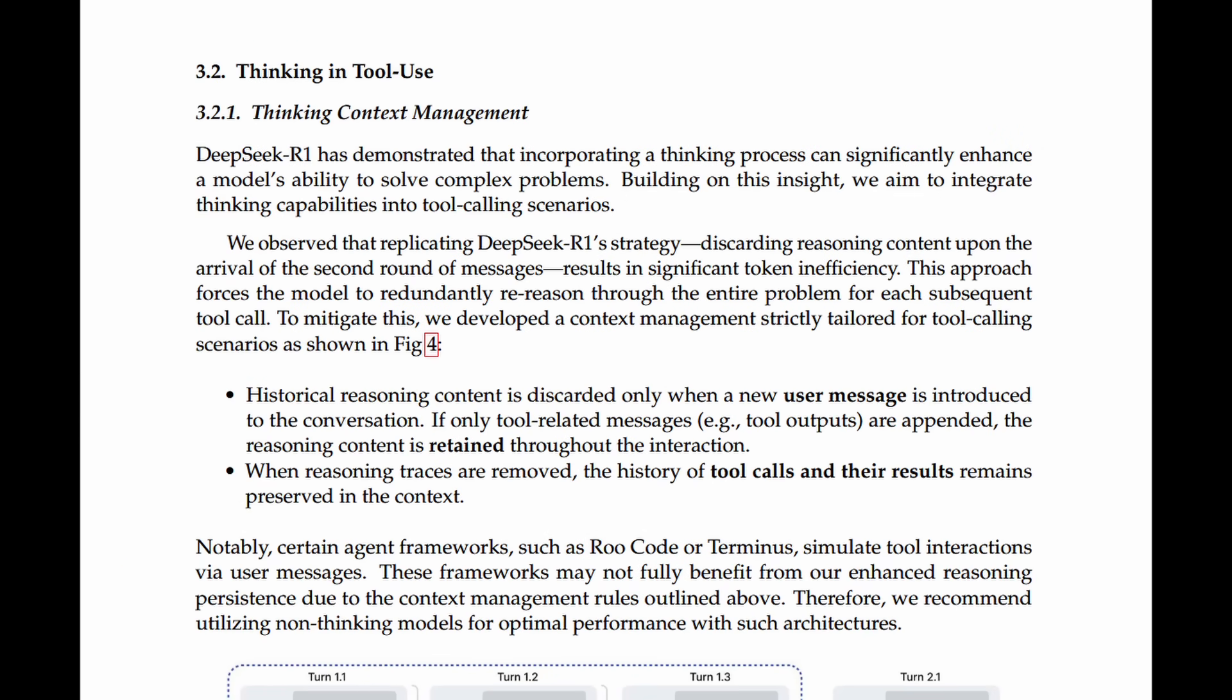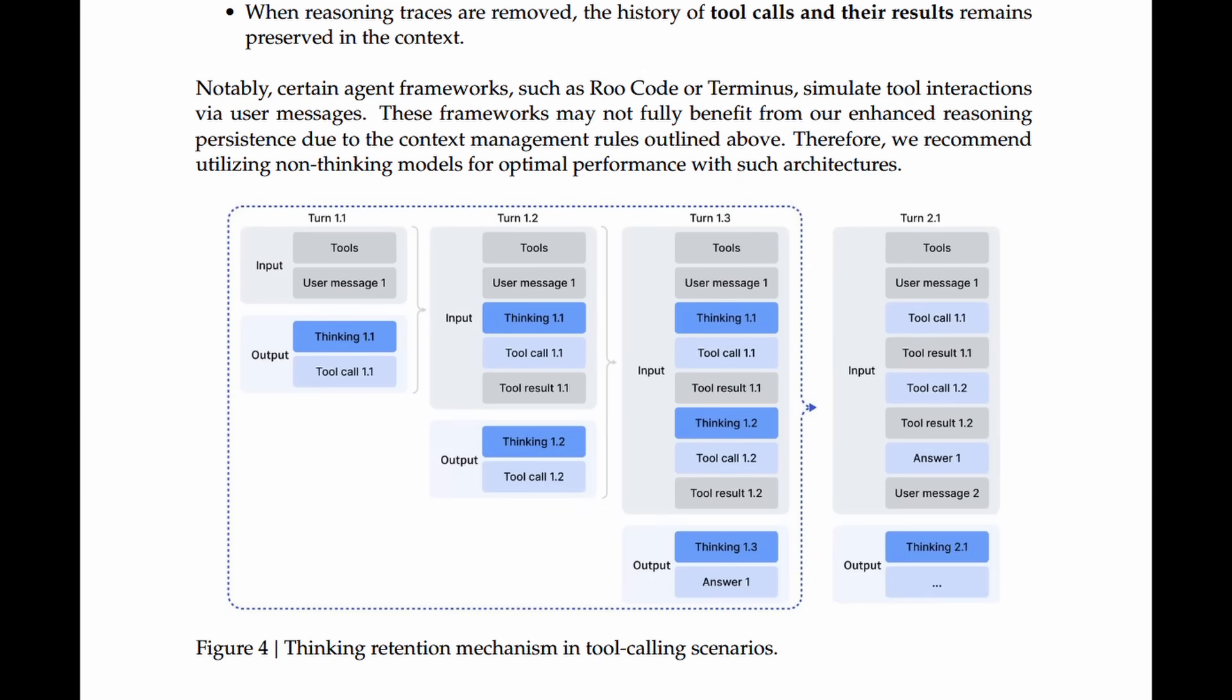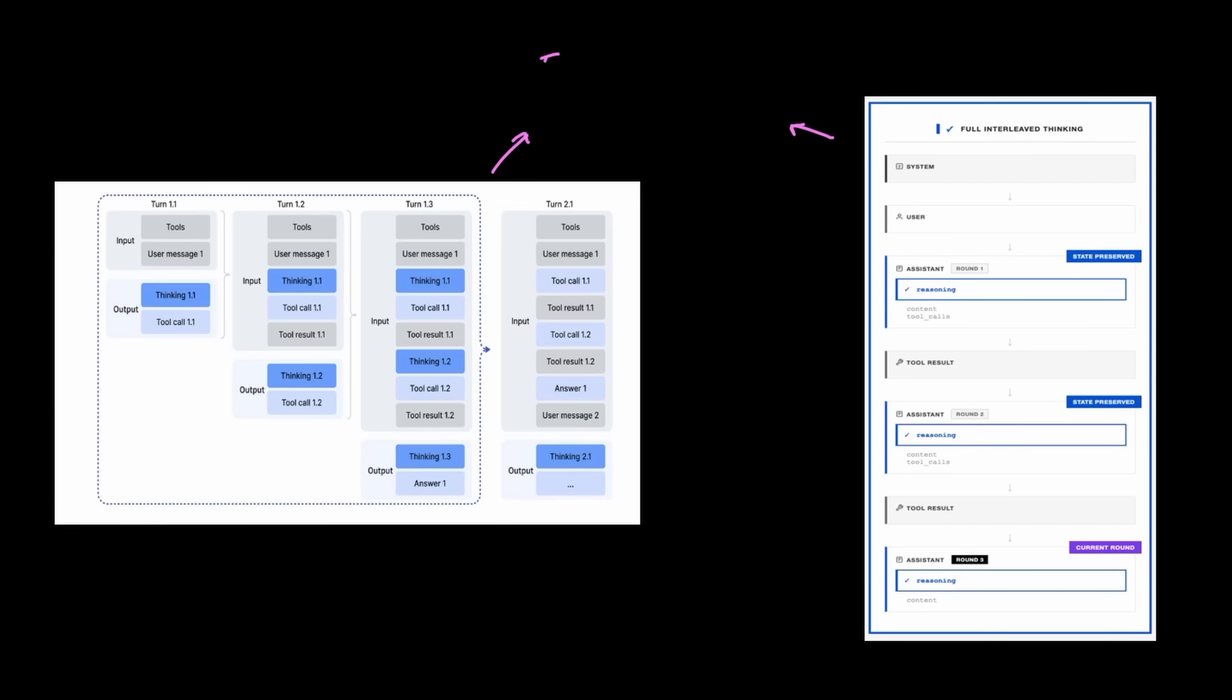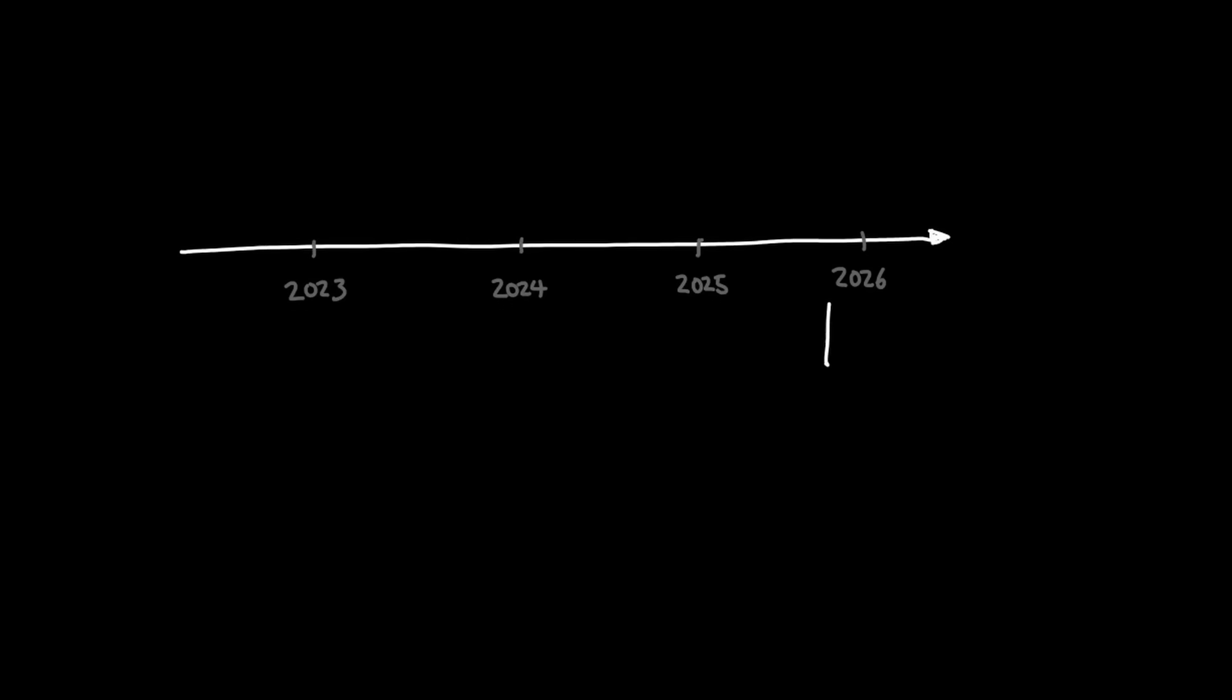Another technical advancement worth mentioning is what they call thinking in tool use, which is very similar to interleaved thinking that we saw in other models like Minimax M2. And this is again aiming at efficiency of token usage so that the reasoning traces are kept between tool calls so that if the model makes multiple tool calls to gather more information during its thinking stage from your system, it can retain its reasoning traces and effectively have a longer term token efficiency rather than having to rethink or re-reason as it continues to work through your request.